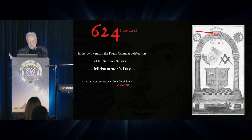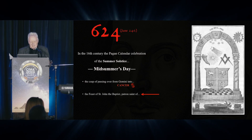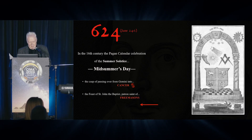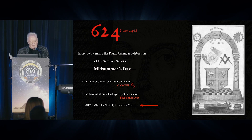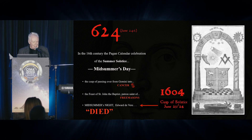That's Cancer and Gemini into Cancer, 6-9. It's also the feast day, as I said, of St. John the Baptist, patron saint of — Freemasons. But it's also the night, midsummer night, when Edward de Vere died on the cusp of the solstice, June 23rd to 24th, in the year 1604. How did he manage that?